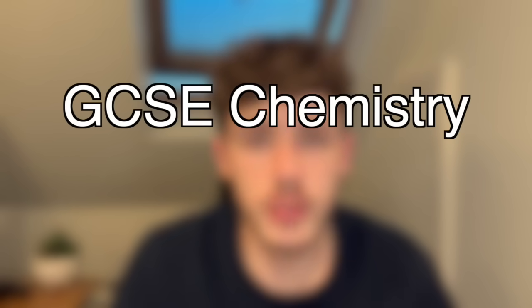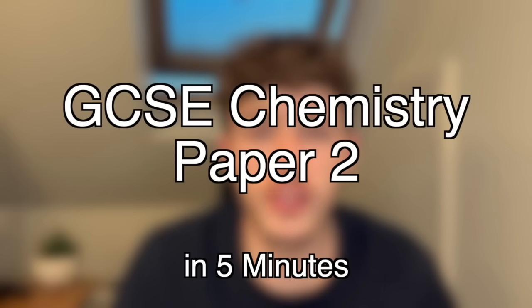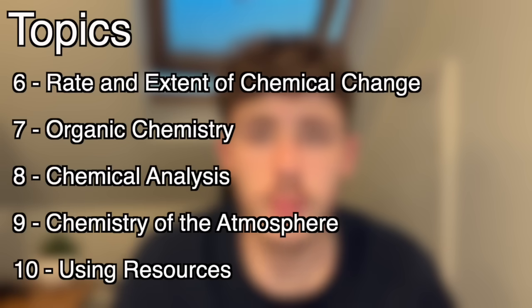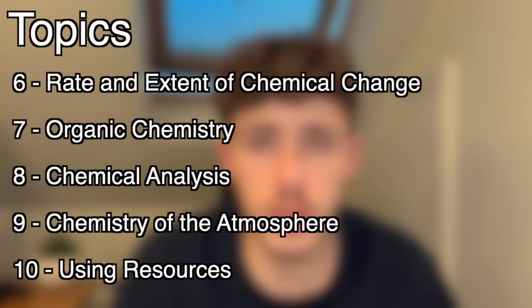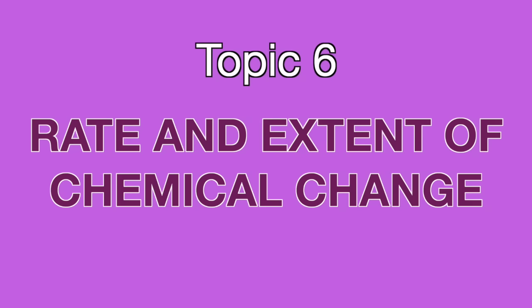This is GCSE Chemistry Paper 2 in 5 minutes. Both triple and combined have 5 topics in Paper 2, so without wasting any time, topic 6 is the rate and extent of chemical change.